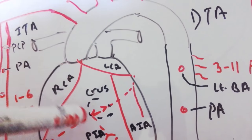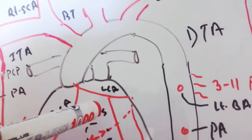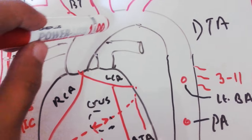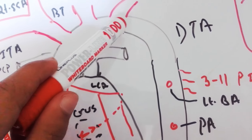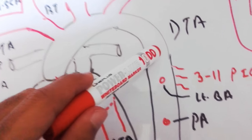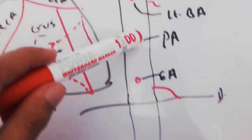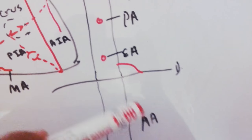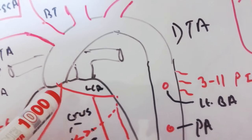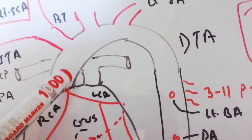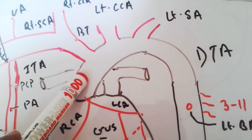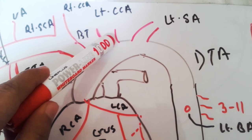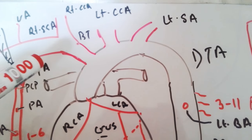The left ventricle pumps the blood into the ascending aorta and arch of aorta, and it finally goes to the descending thoracic aorta. After crossing the diaphragm it becomes the abdominal aorta and supplies the whole body. The arch of aorta has three branches: the brachiocephalic trunk, left common carotid artery, and left subclavian artery.